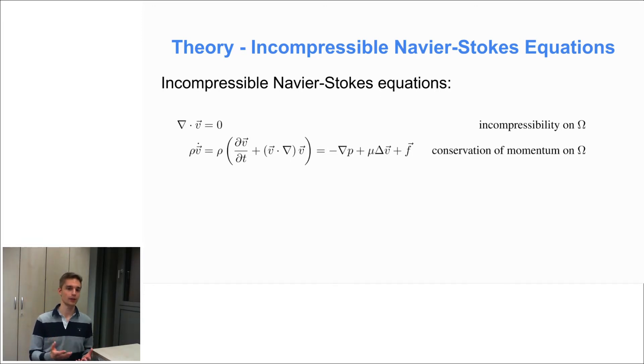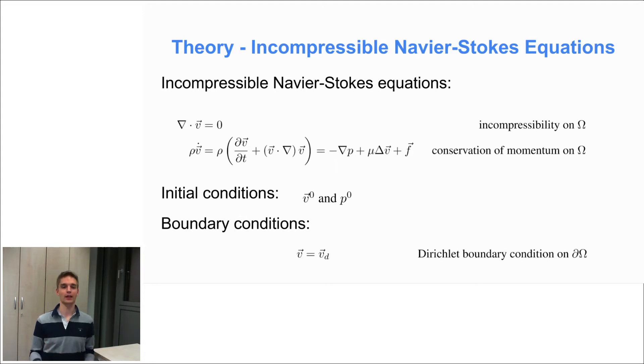And these forces can be the gradient of the pressure field, the viscous forces, and external forces. These equations then have to be solved given initial conditions for the velocity field and the pressure field and also for boundary conditions at the domain boundary. And here we considered the Dirichlet boundary conditions which set the velocity field to a fixed value on the domain boundaries.